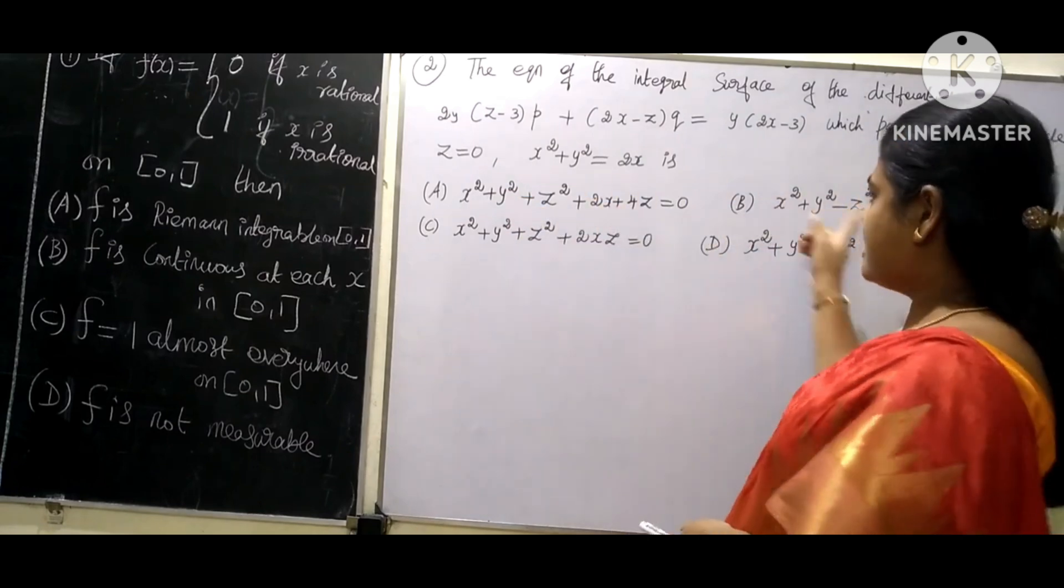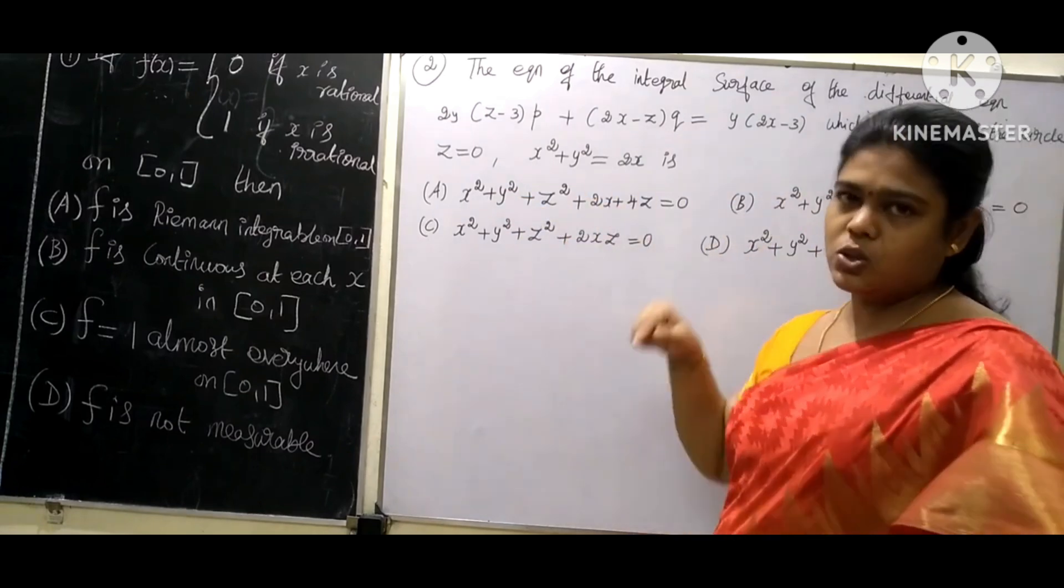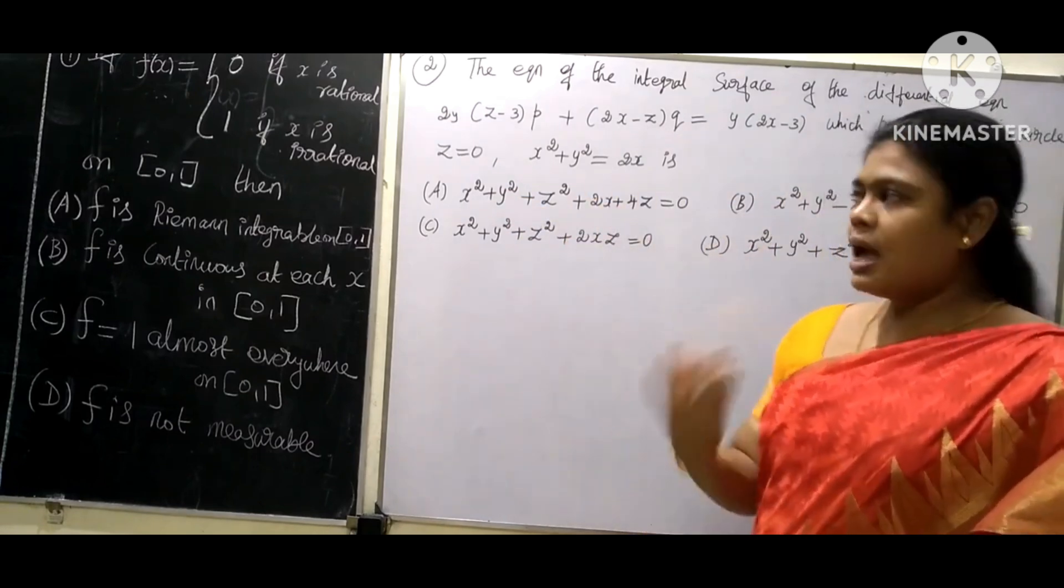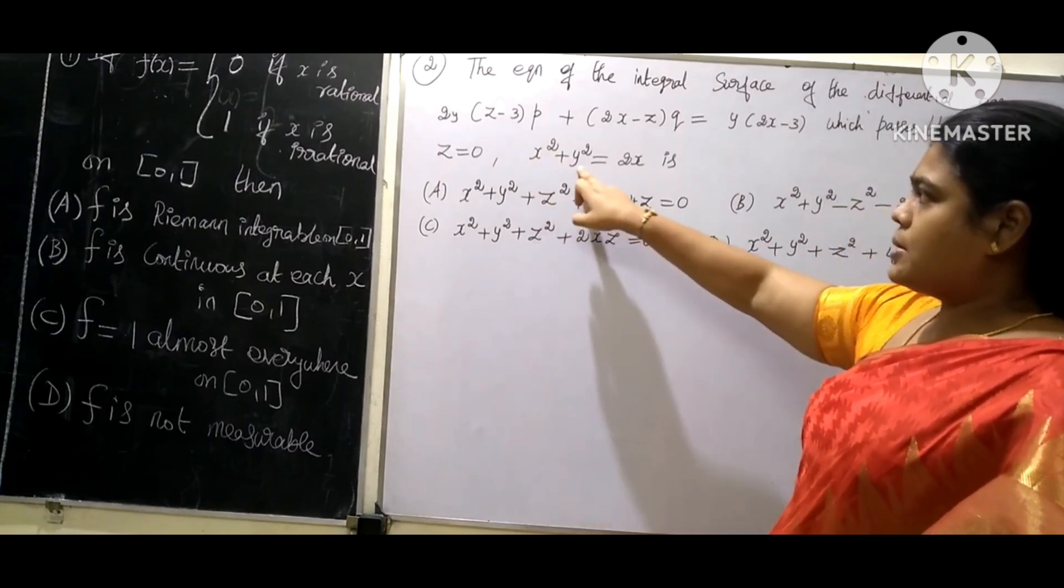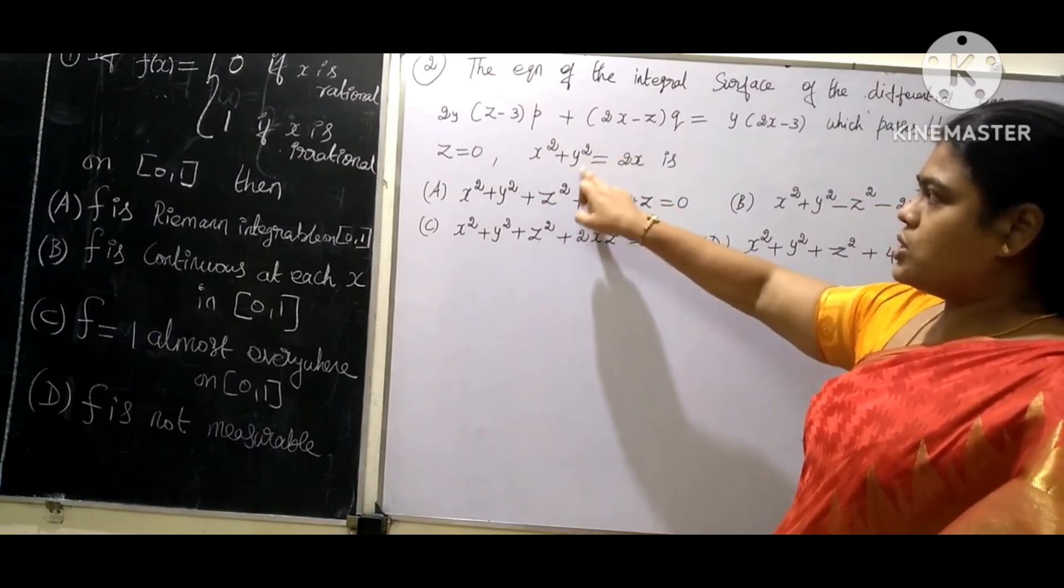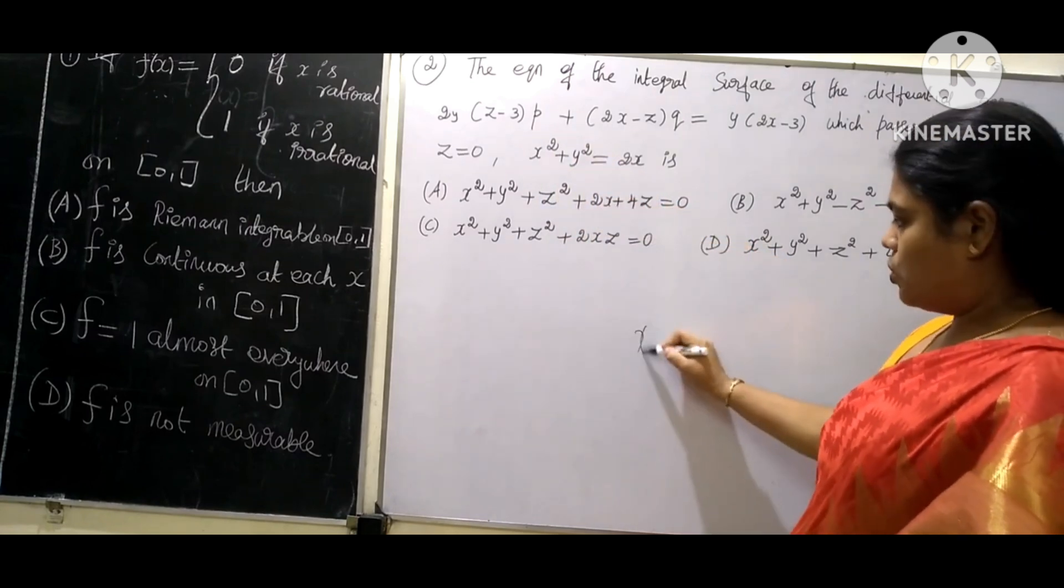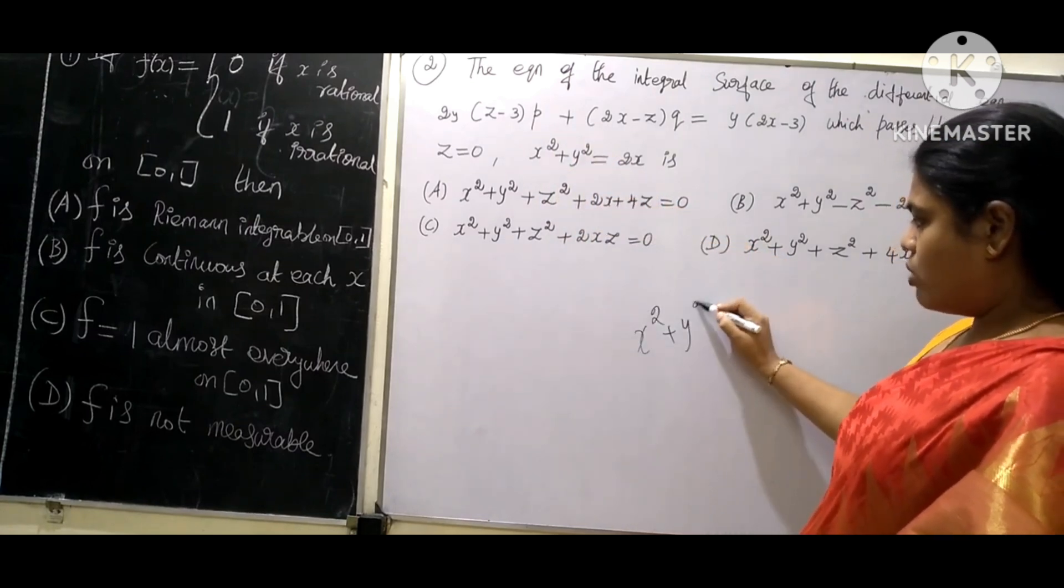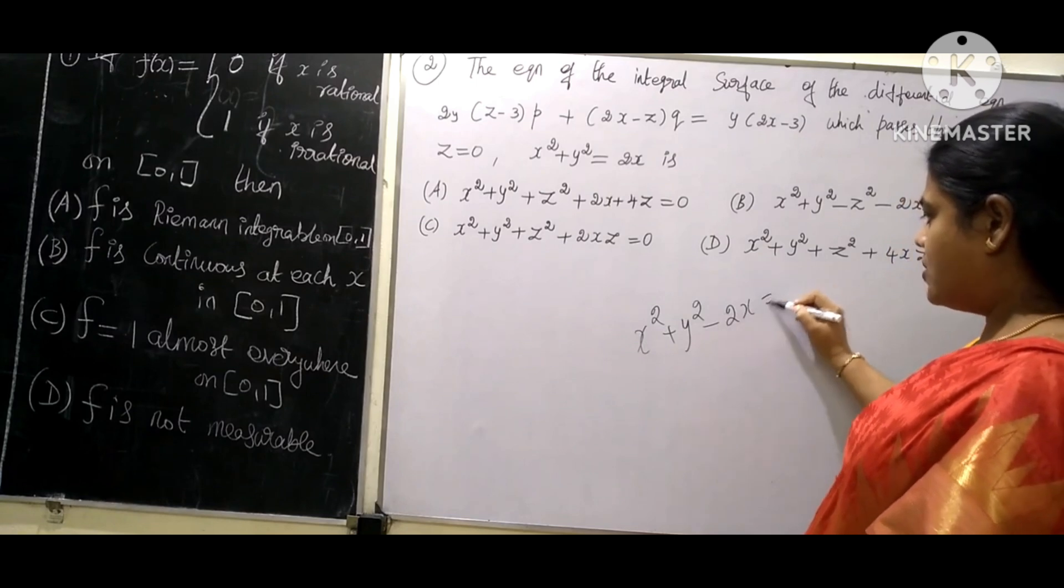But if you have the answer options, you can check all the options. x² + y² = 2x, so x² + y² - 2x = 0.